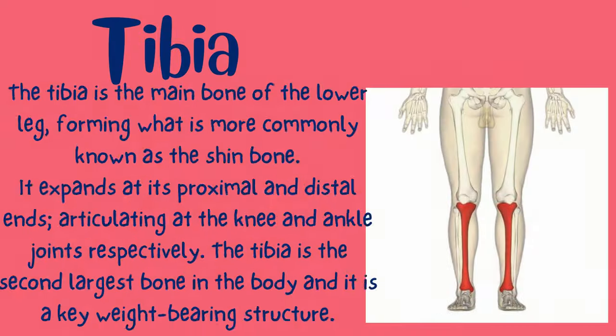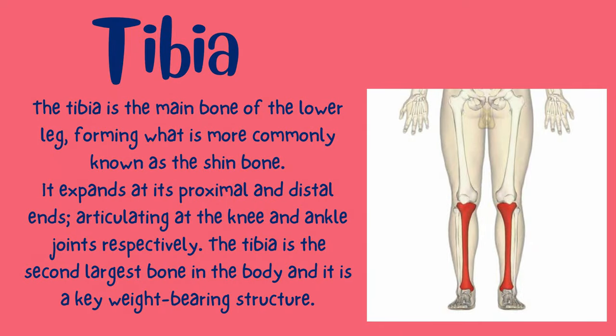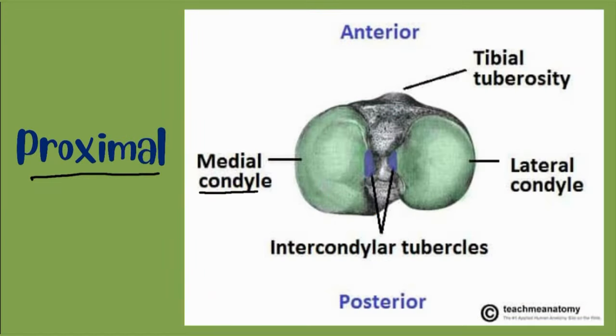Now we're going to study the tibia, the main bone of the lower leg, more commonly known as the shin bone. It expands at its proximal and distal ends, articulating at the knee and ankle joints respectively. The tibia is the second largest bone in the body and is a key weight-bearing structure.